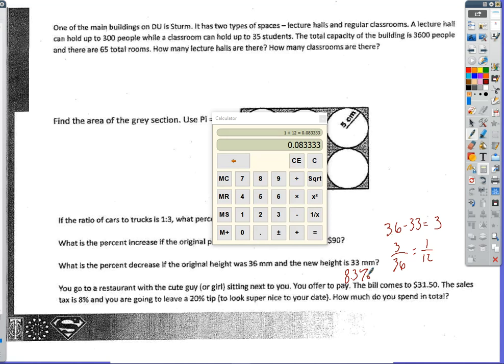Finally, you find a cute person next to you, and you're like, I'm going to offer to pay their bill. Maybe they'll talk to me. The bill comes to $31.50, and the sales tax is 8%, and you're going to leave a 20% tip. So the tip is always based on this number here. The easiest way to do this is to turn it into 10% and double it. So you have $3.15 is 10% times 2 is $6.30. So right away, I know we're going to have $31.50 plus $6.30, and so we're at $37.80.